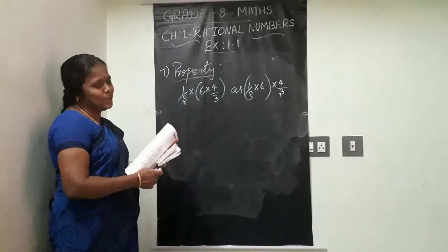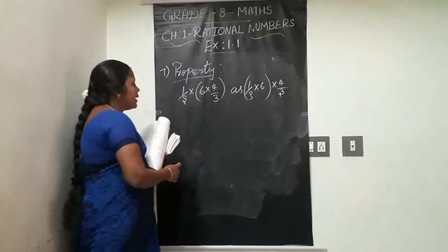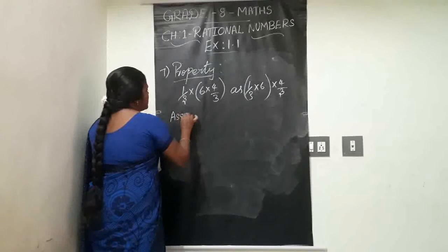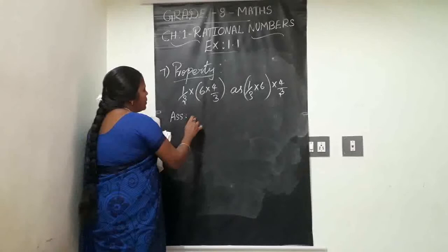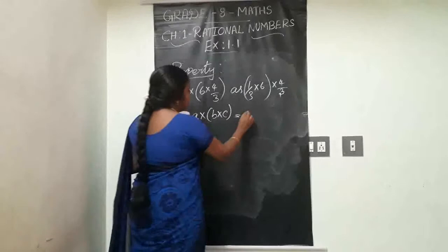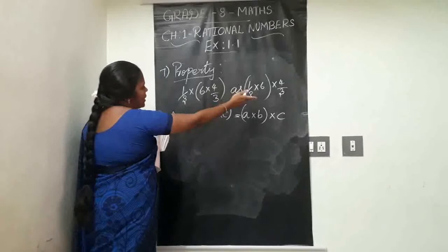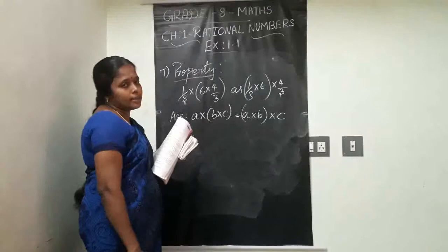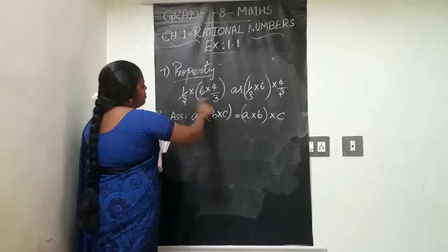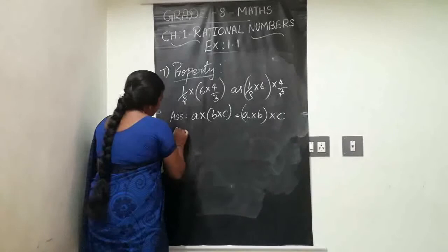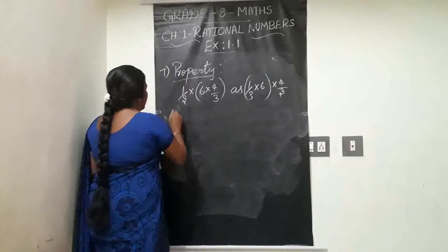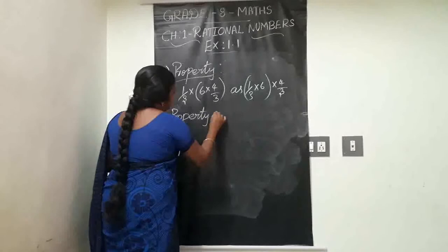For any three rational numbers a, b, c: a times (b times c) equals (a times b) times c. This is the associative property. Here the grouping of numbers is changed. We can multiply rational numbers in any order by regrouping. So the property for question seven is associativity. Write the property name: associativity.